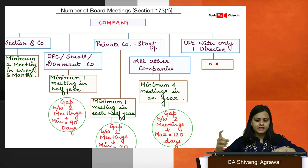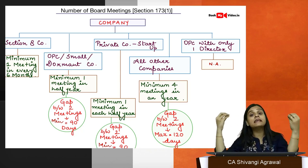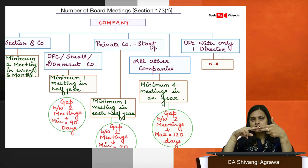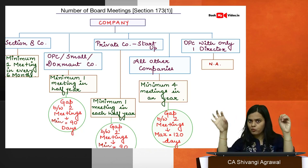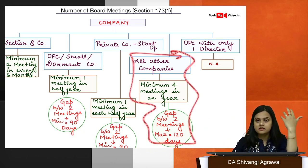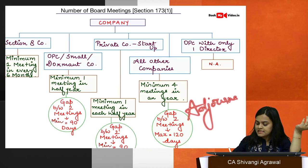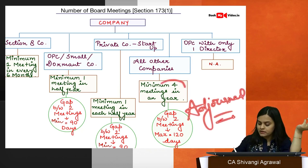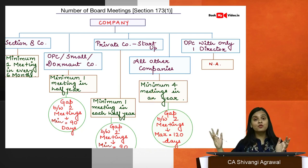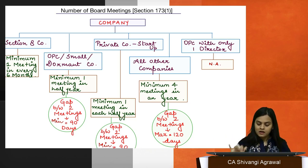The first board meeting must be held within 30 days of incorporation. Thereafter, every company must hold a minimum of four board meetings in every calendar year, with a maximum gap of 120 days between two board meetings. This is the general rule for all types of companies. Importantly, even adjourned meetings must happen within this time limit — if a meeting is called, adjourned, and held later, the 120-day gap between two meetings still applies.